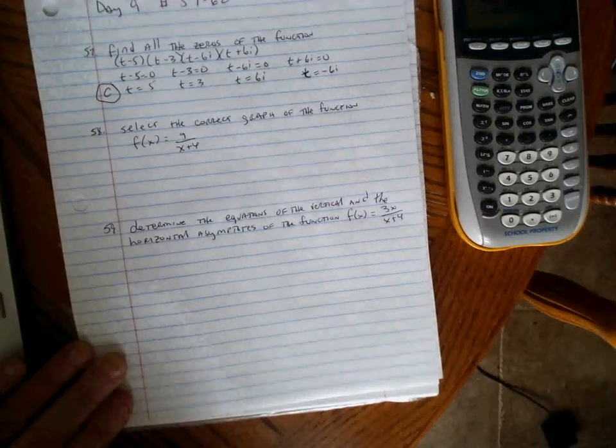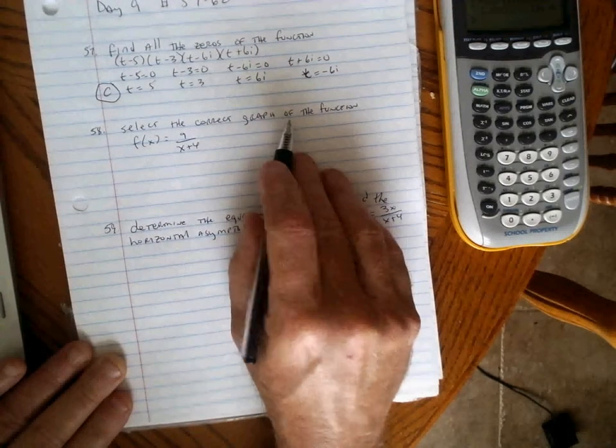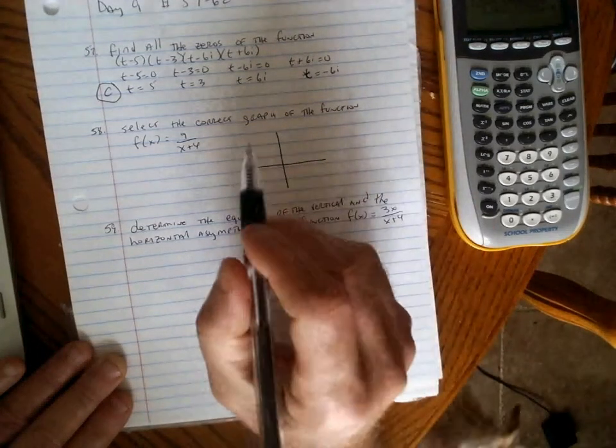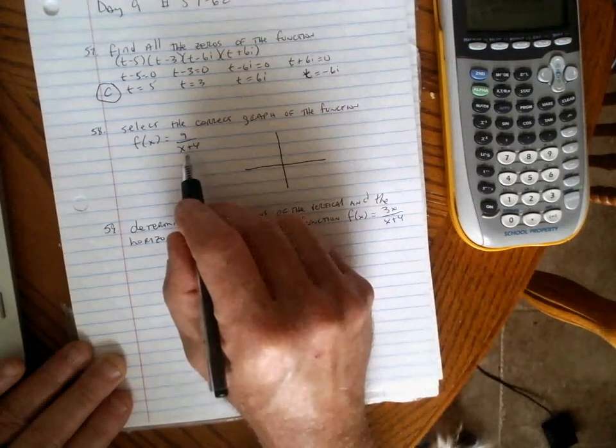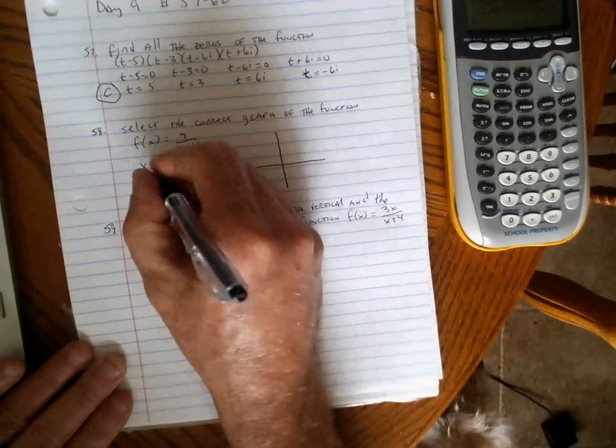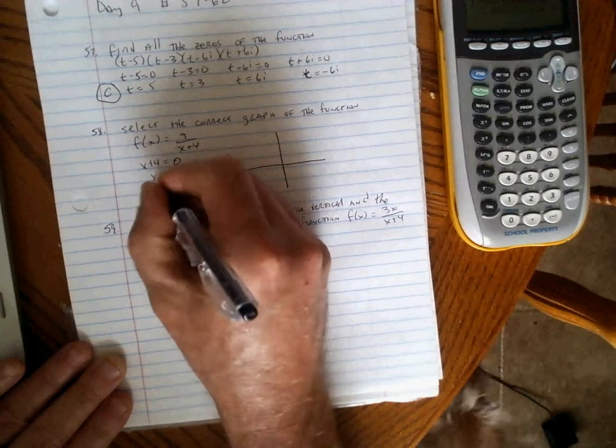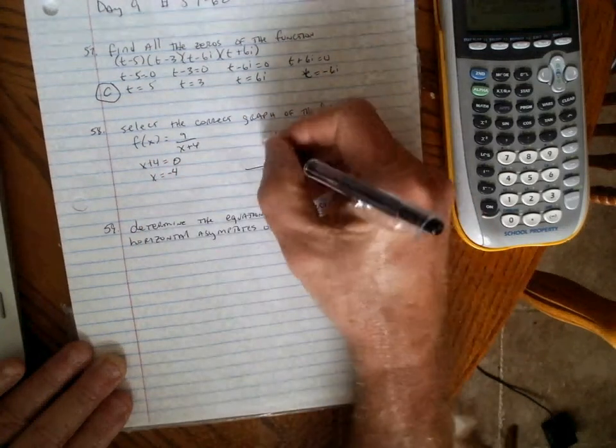Problem 58 tells us to select the correct graph of the function f(x) = 9/(x+4). Recall vertical asymptotes happen when the denominator equals zero.